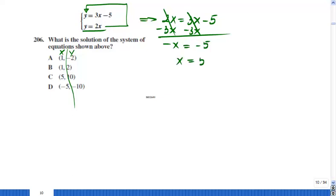Obviously, X will be the opposite of that, which is 5. Well, the only one that has X equals 5 is C. And that's the answer.